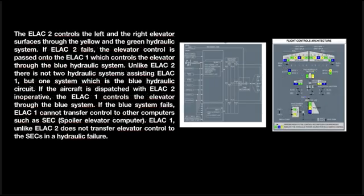ELAC 2 controls the left and right elevator surfaces through the yellow and green hydraulic systems. If ELAC 2 fails, elevator control is passed on to ELAC 1, which controls the elevator through the blue hydraulic system. Unlike ELAC 2, ELAC 1 is only assisted by one system — the blue hydraulic circuit. If the aircraft is dispatched with ELAC 2 inoperative, ELAC 1 controls the elevator through the blue system.